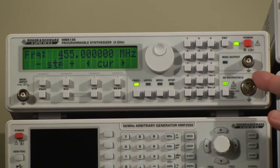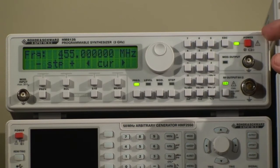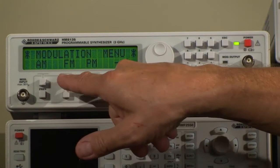Once you have set up your signal, press this button, RF output, and the signal is coming out here. And your built-in modulation generator, that signal comes out here.